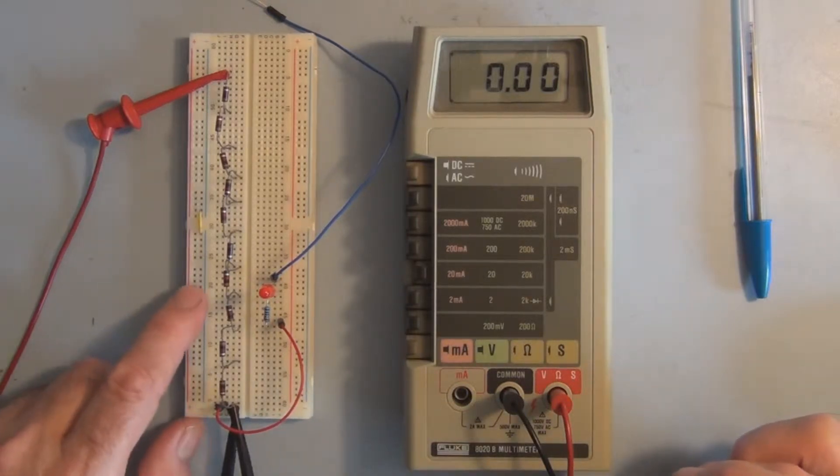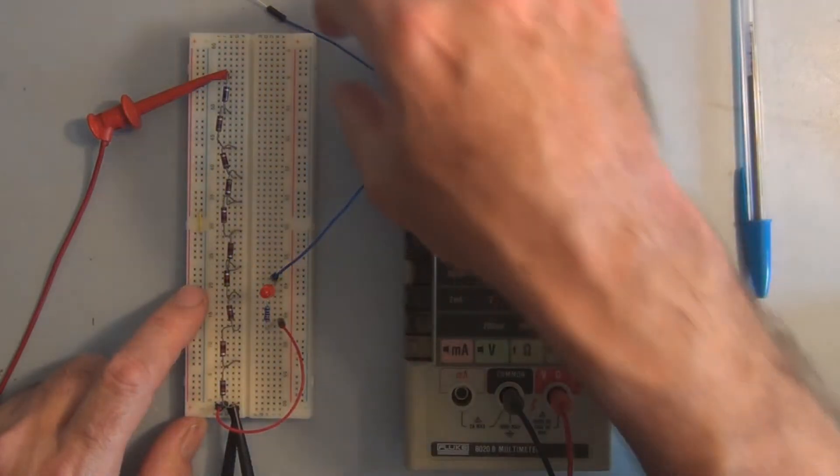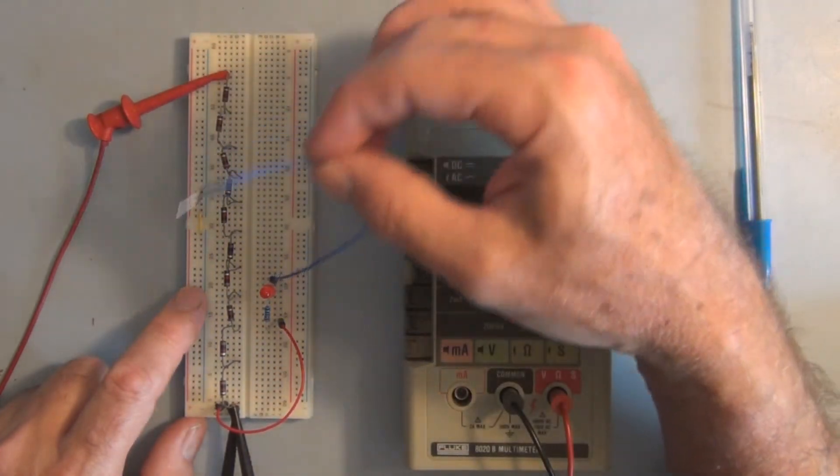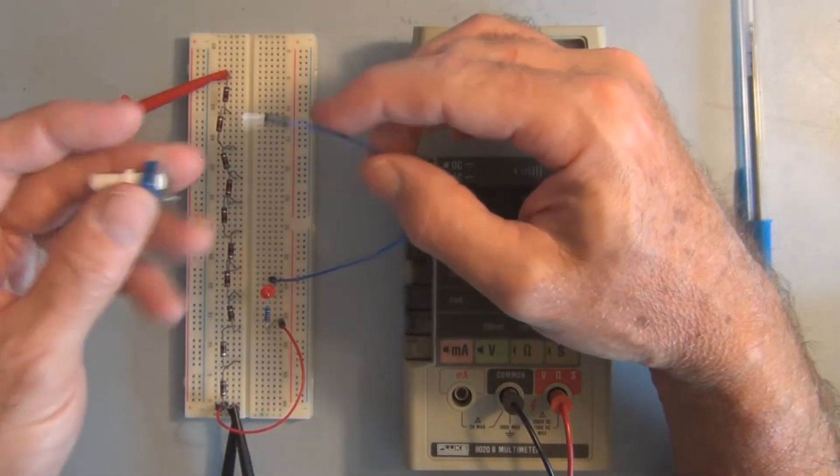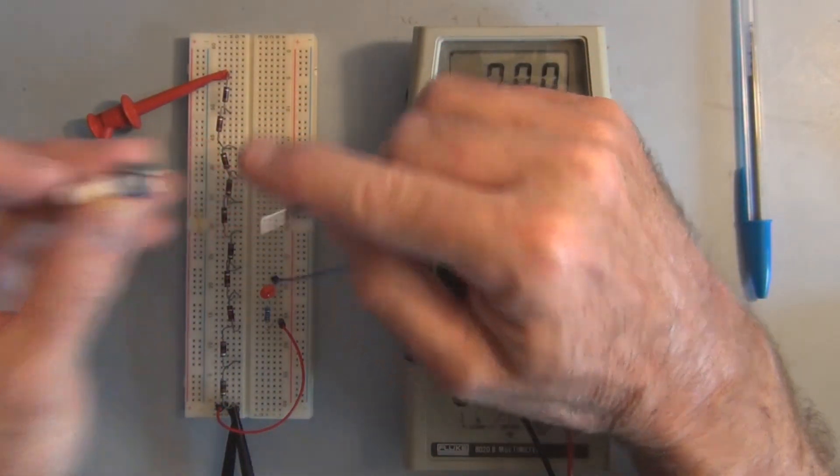And here again, I have 10 individual 1k resistors that I use to simulate the action of a 10k potentiometer. And as you can see here, you can think of this jumper lead here as the center pin on this potentiometer.